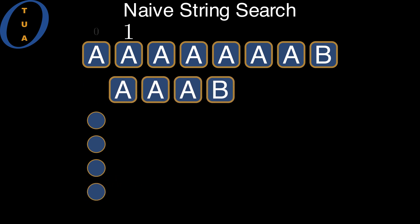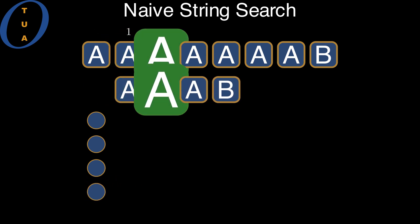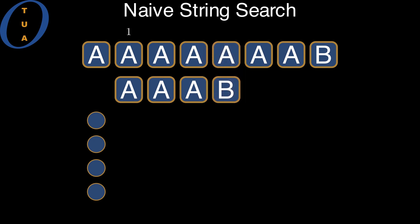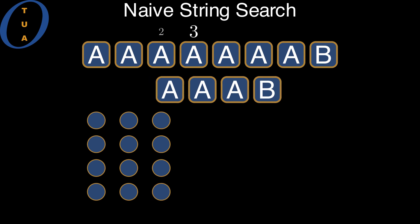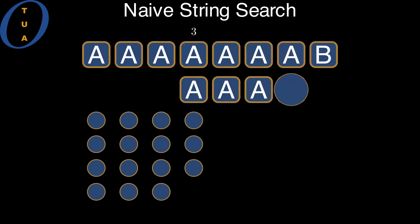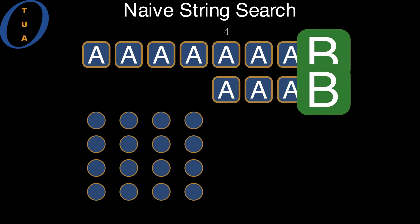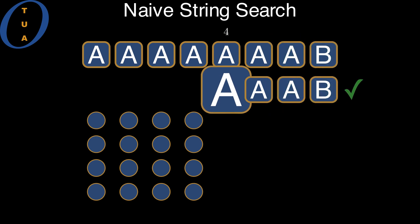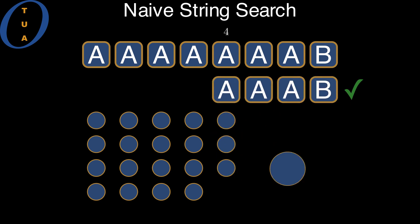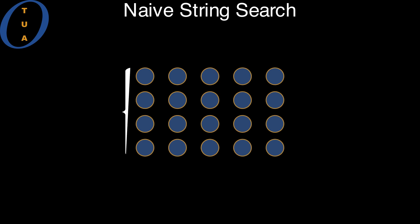At position one, it again compares all elements in the pattern, failing at the last one, and we therefore add m more tokens. The story repeats itself for all offsets except the last one. At the last offset, all comparisons succeed and we have found a match. Still, there are as many comparisons as there are symbols in the pattern, and we therefore add m more tokens.